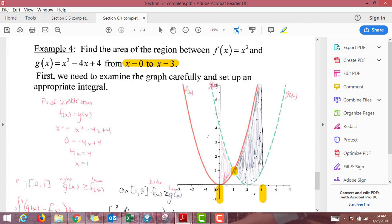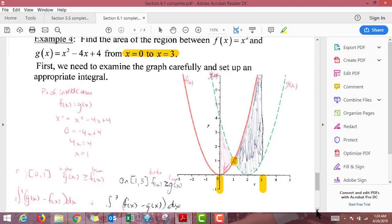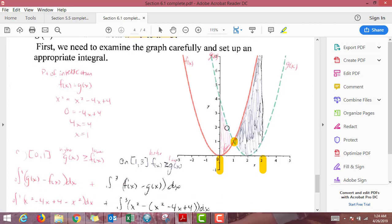So from 0 to 1, one thing is happening, and from 1 to 3 another thing is happening. So I have it color coded. I have red shaded for the area that's between these two functions from 0 to 1, and then I have black shading from 1 to 3 for the area between the two functions.